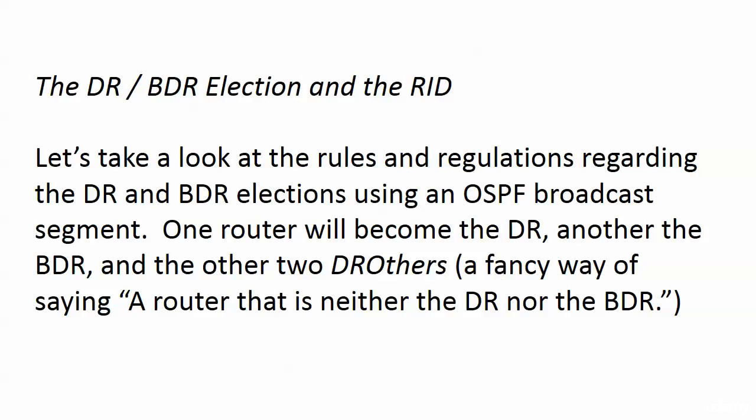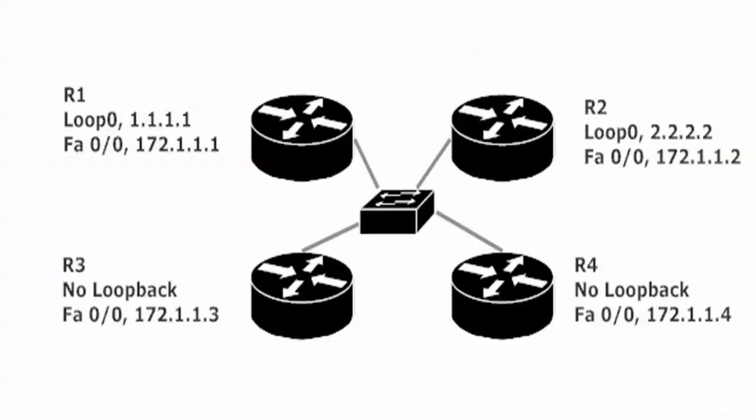That's how orderly that change is. Now we're going to look at the DR/BDR election process - we want to know exactly what's going on and why the OSPF router ID, or RID, matters. We'll see these elections live on several different network types. On a broadcast segment, one router becomes the DR, another becomes the BDR, and if you had four routers on that segment, the other two would become DR others - a router that is neither the DR nor the BDR. With seven routers, you'd have five DR others.